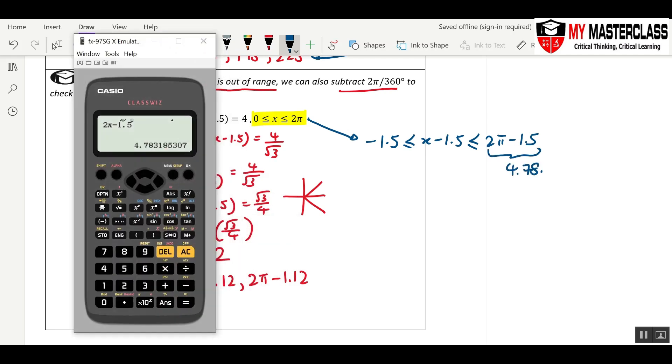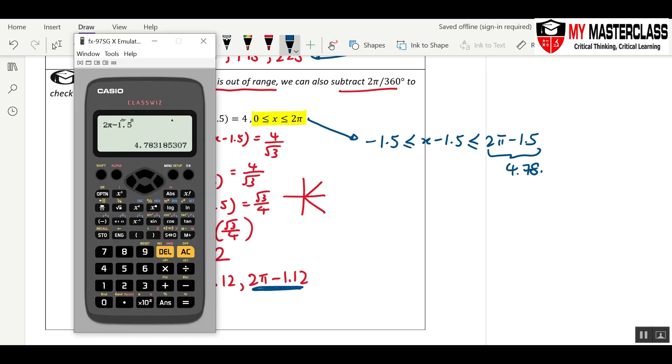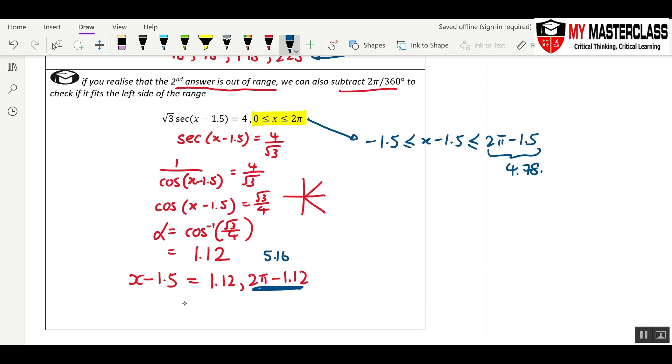You realize that for this one, this angle here is 2π minus 1.12, and that is going to be 5.16. First, you have to know that something minus away 1.5 versus something minus away 1.12, this guy will be bigger. So this one is out of range.